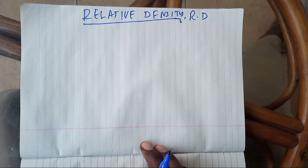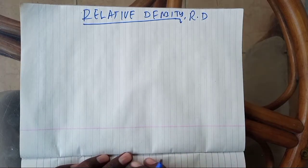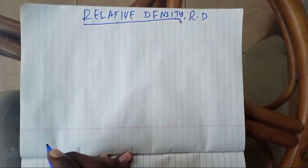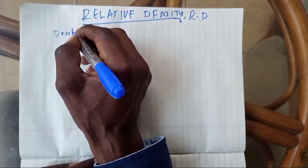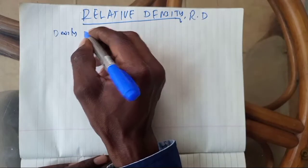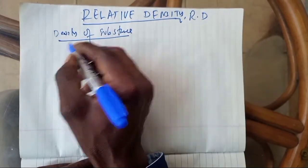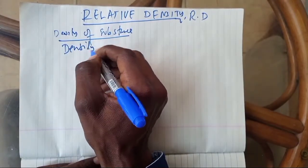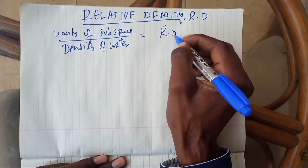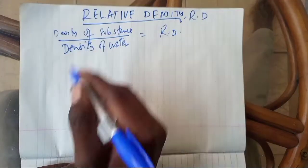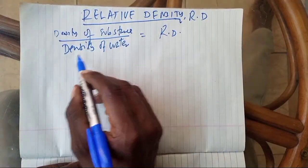We have something important to discuss about relative density. Relative density is all about comparing. We are making the comparison between the density of a substance and the density of water. Relative density is the density of the substance per density of water — that is, the ratio of the density of the substance to the density of water.